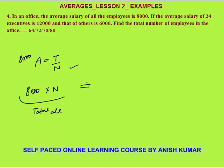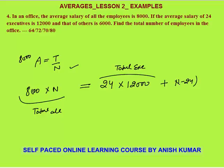This total salary can also be calculated on the right side. Given that the average salary of 24 executives is 12000, total salary of executives is 24 × 12000. Total employees are n, out of which 24 are executives, so the number of others is n − 24. Adding (n − 24) + 24 gives total employees n. The n − 24 other employees have an average salary of 6000. So the equation is: 8000n = 24 × 12000 + (n − 24) × 6000.